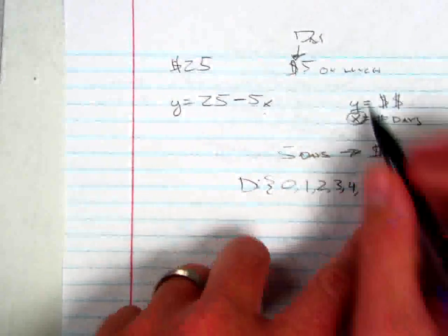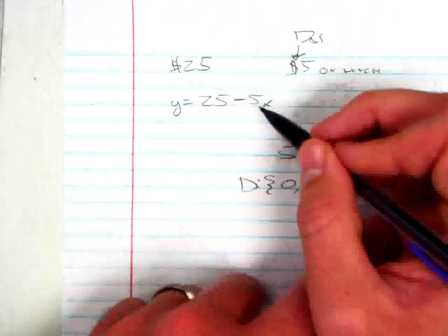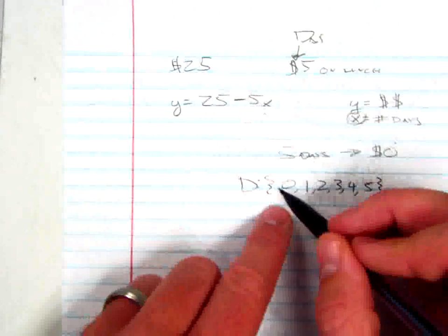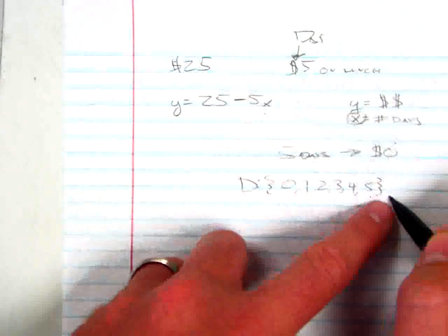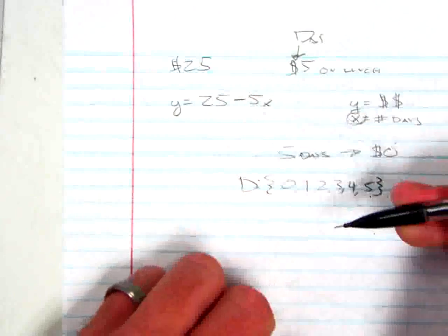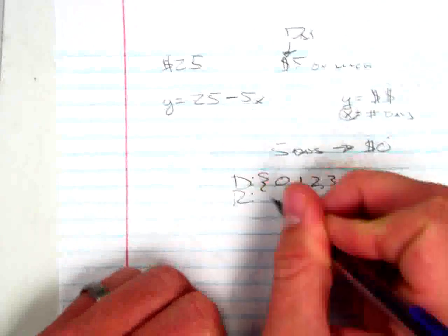Because on that 6th day, am I going to be able to buy lunch? No, because I only started with $25. After 5 days, I have spent all my money. So these are the only input values that we have. These are the only values that I can put in for x right there. And the range is going to correspond with that.